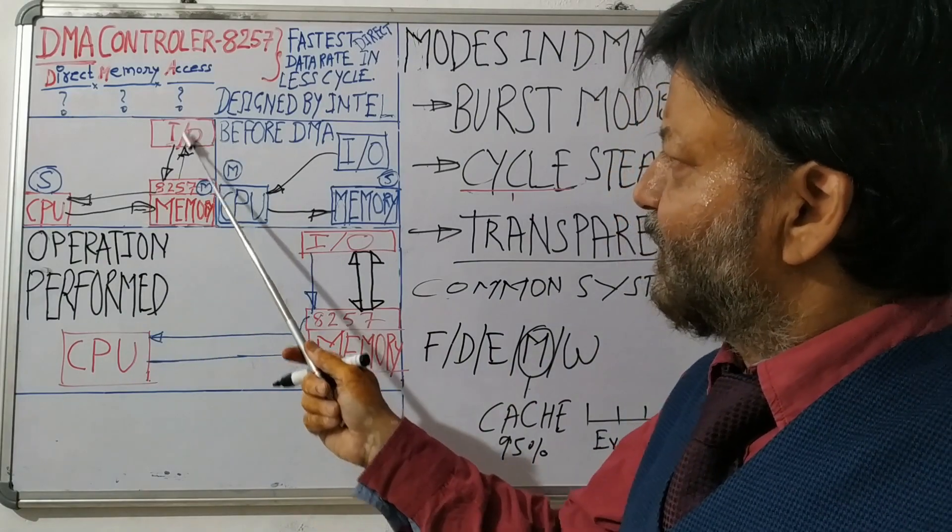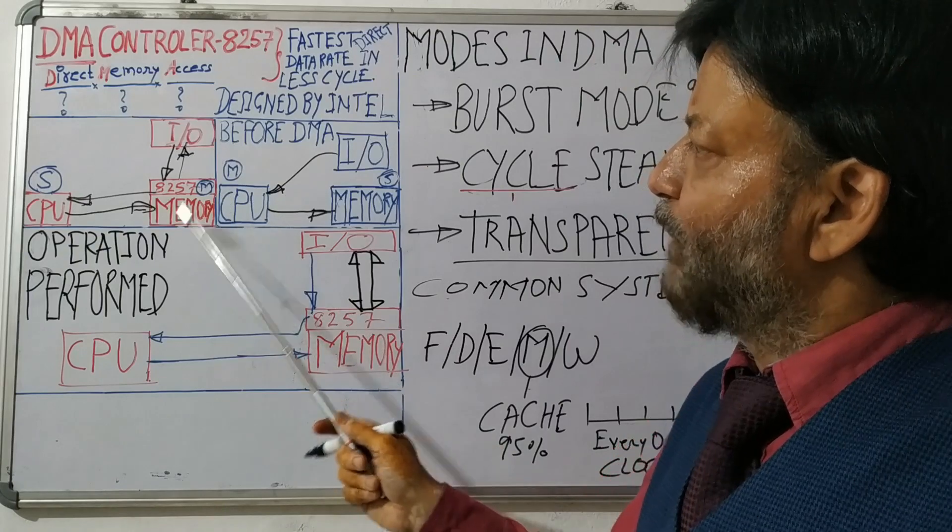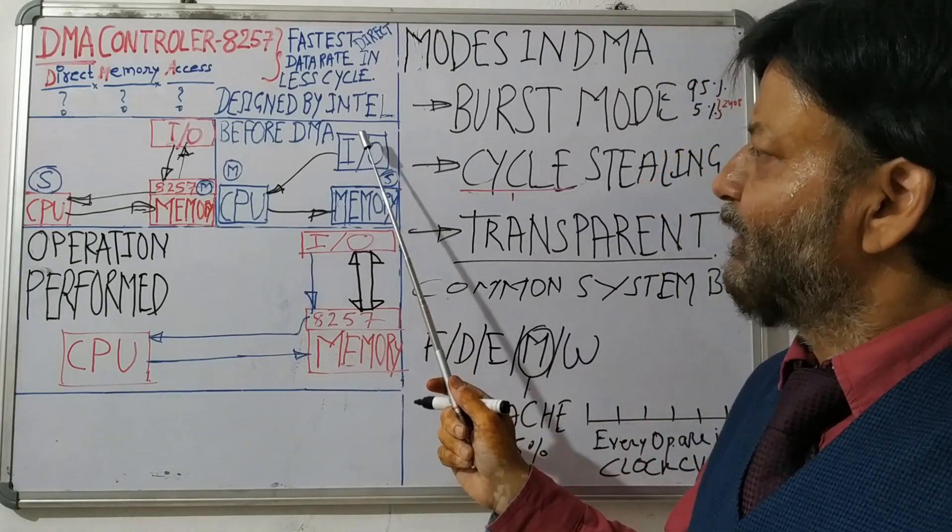So here the work is done in single cycle between IO and memory. Here we need two cycles as we have seen.